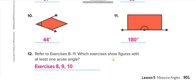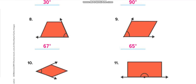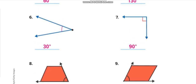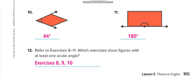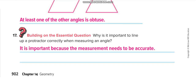The question asks which exercises show figures with at least one acute angle. An acute angle is less than 90 degrees. Checking the figures: 44 degrees — yes, less than 90; figures 9 and 8 are also less than 90. So exercises 8, 9, and 10 have acute angles.